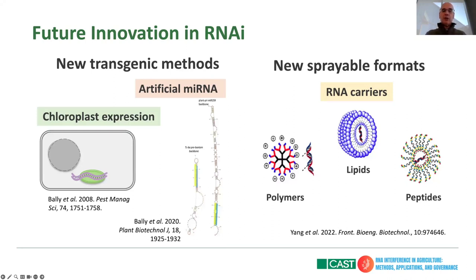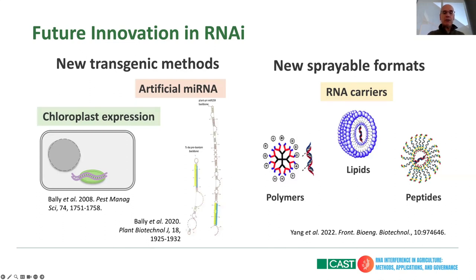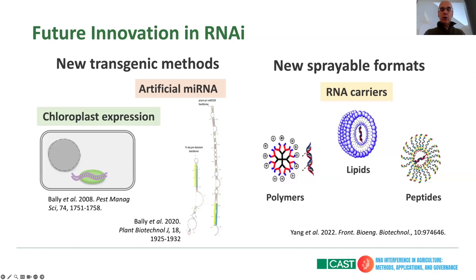As I mentioned previously, new sprayable formats based on carriers — there's a large amount of research going into cationic polymers of all sorts, starting with ones found in nature, like chitosan. The positively charged cationic polymers bind to the negative charge of the RNA and provide an ionic complex that is more resistant to degradation or more amenable to uptake — similar concepts when encapsulating in lipids or peptide carriers.